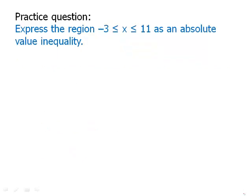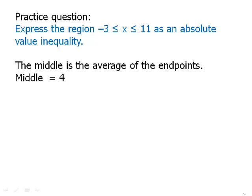Here's another practice question. Pause the video and then we'll talk about this. Once again, the first thing we have to do is find the middle of that region. We find the middle of the region by averaging. So negative 3 plus positive 11 is positive 8 divided by 2 is 4. That's the middle point.